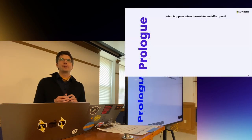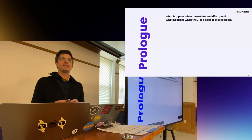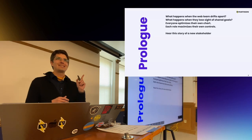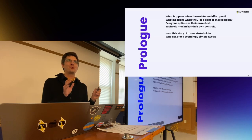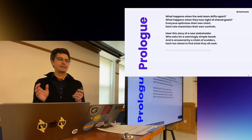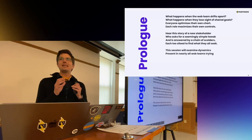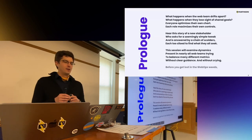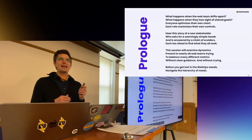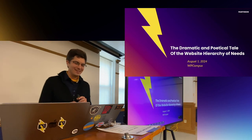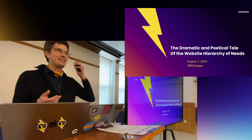What happens when the web team drifts apart? What happens when they lose sight of shared goals? Everyone optimizes their own chart. Each role maximizes their own controls. Hear this story of a new stakeholder who asks for a seemingly simple tweak and is answered by a chain of scolders, each too siloed to find what they all seek. This session will examine dynamics present in nearly all web teams, trying to balance many different metrics without clear guidance — and without crying. Before you get lost in the web ops weeds, navigate the hierarchy of needs.